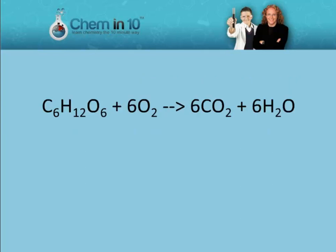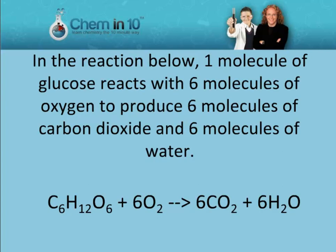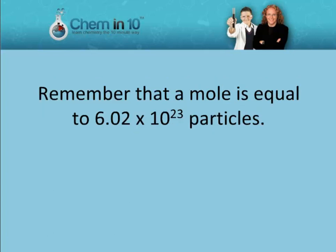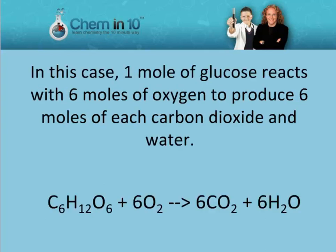Here we have a reaction of glucose, C6H12O6, with 6 molecules of oxygen to produce 6 molecules of carbon dioxide and 6 molecules of water. In this reaction, one molecule of glucose reacts with 6 molecules of oxygen to produce 6 molecules of carbon dioxide and 6 molecules of water. Since we cannot see molecules, we can interpret this reaction in terms of moles. Remember that one mole is equal to 6.02 times 10 to the 23 particles. In this case, one mole of glucose reacts with 6 moles of oxygen to produce 6 moles of each carbon dioxide and water.